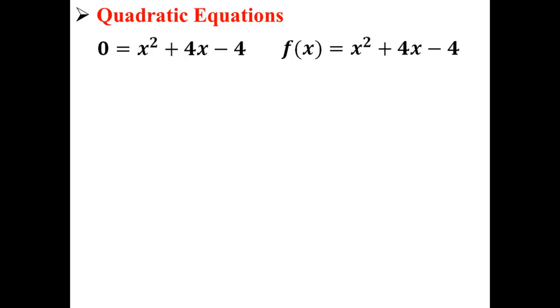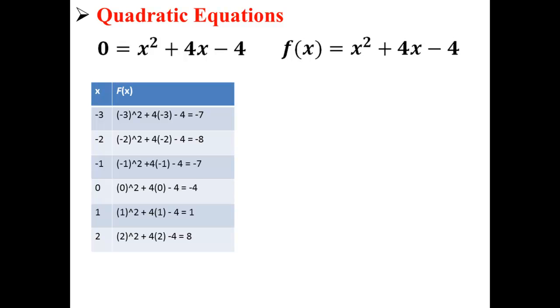Here we have our equation and function once again. We're going to select a series of x values and plug them into the equation to find our y values. For example, when we have negative 3, f of negative 3 is negative 3 squared plus 4 times negative 3 minus 4, which is equal to 7.